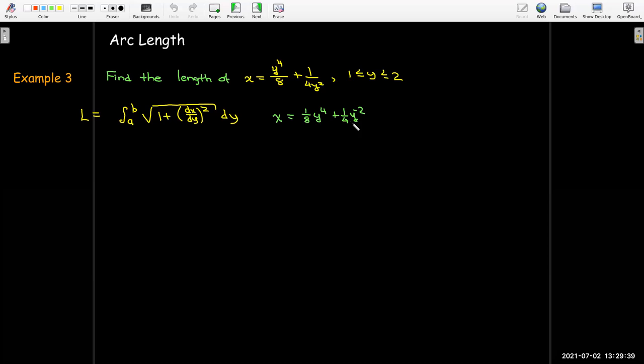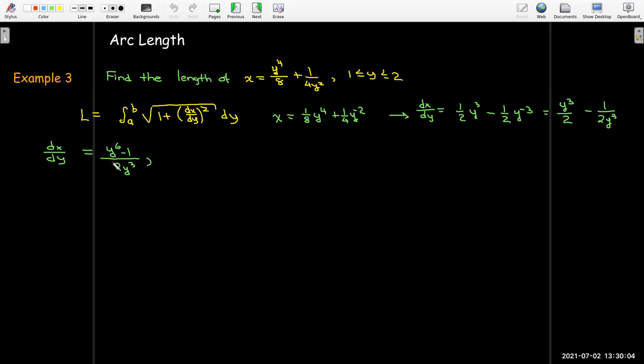And so I'll rewrite x in terms of powers of y, find dx/dy and now I have to do some algebra in order to calculate the integrand in a way where I can find the antiderivative. So I'll write them as the difference of two fractions, write that with a common denominator. To do that I need to multiply the first fraction by y cubed over y cubed. So that gives me as a single fraction y to the power of 6 minus 1 over 2y cubed. Well I need to square that and add 1.